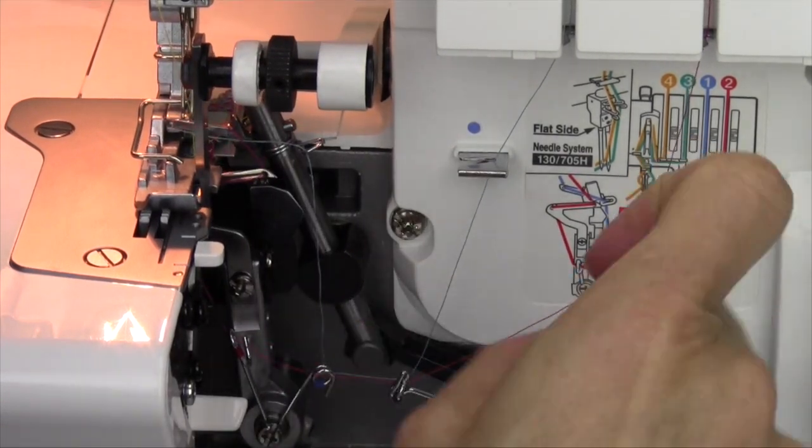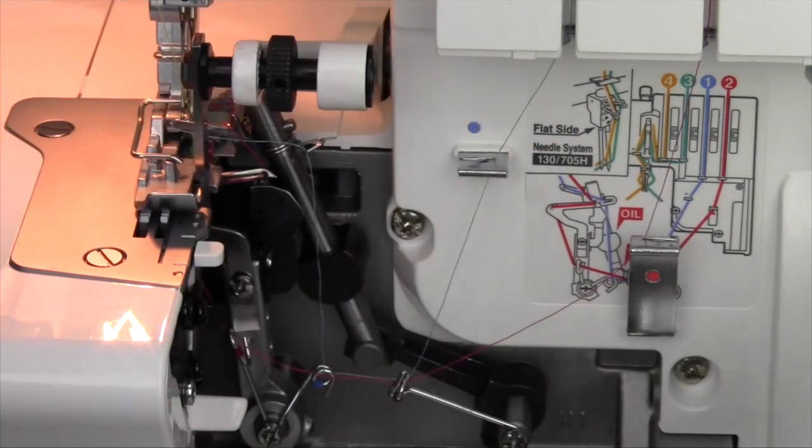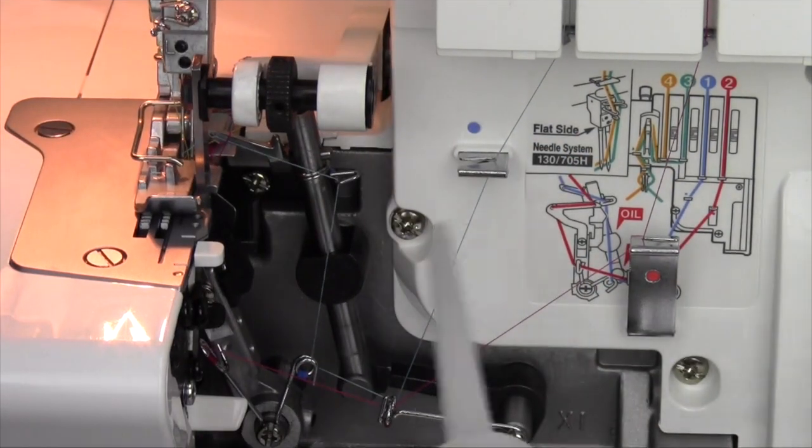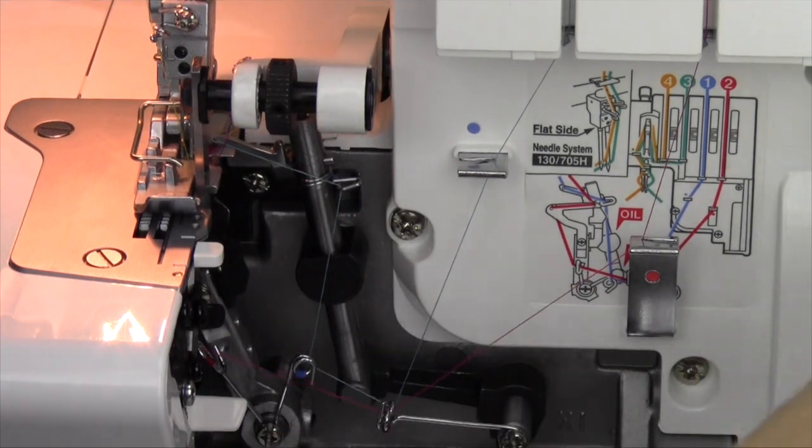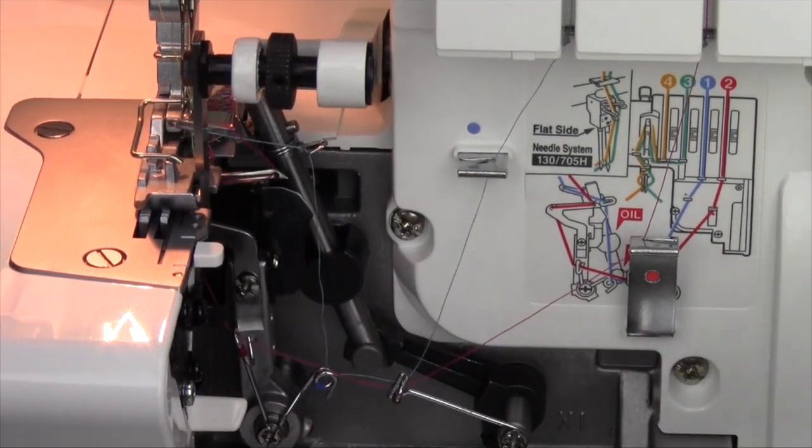Down at the bottom, there's an area that is rubbing against each other. That is where they want you to put a little drop of oil there and there, and then as you run it, that will lubricate those two areas.